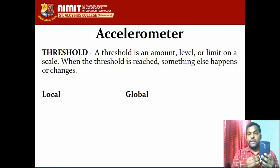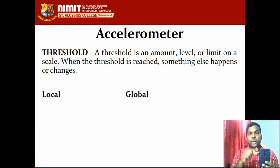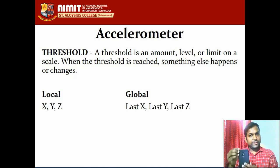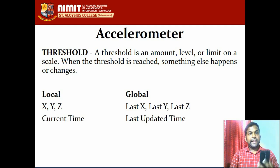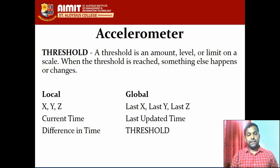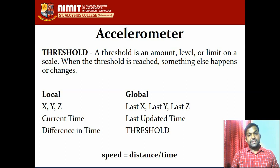I need to understand the concept of threshold — an amount or level at which something happens or changes. For example, lifting a phone requires less force than lifting a laptop. The threshold in our program is the minimum speed at which a shake is recognized. I need to track the previous X, Y, Z values globally, the current X, Y, Z values locally, the last update time, the difference in time, and use the formula: speed = distance / time.